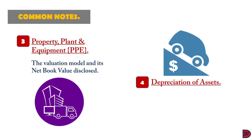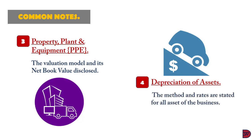You may also have a depreciation of assets note. Here, the method of depreciation adopted — whether straight line or reducing balance method — and the rates for each asset are to be noted. So if you have furniture being depreciated at 20% per annum, you state it; if you have machinery going at 30%, that is also to be stated here.